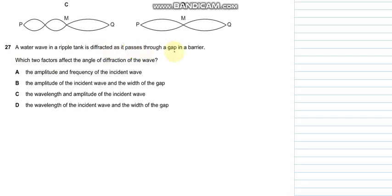Question number 27 says that a wave in a ripple tank is diffracted as it passes through a gap in a barrier. Which two factors affect the angle of diffraction of the wave? The wavelength of the incident wave and the width of the gap, yes, it must be ideal for perfect diffraction.